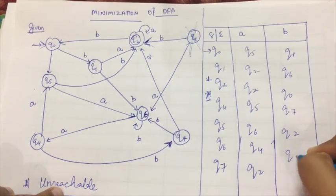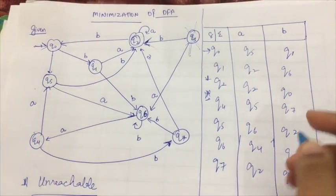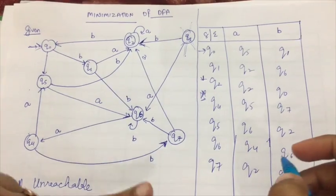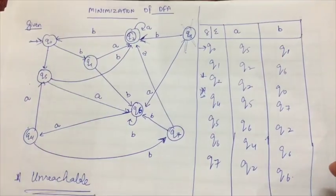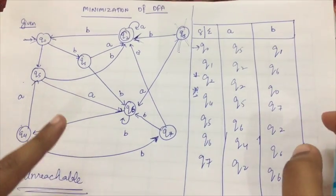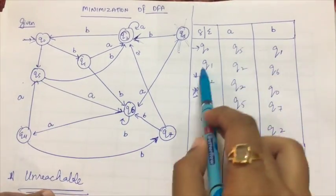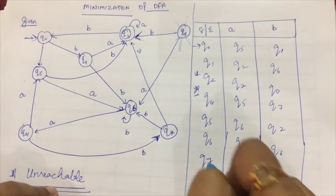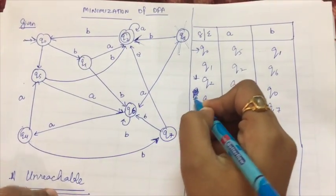Now what we are going to do is we are going to divide these rows into two sets. What will be these sets? The first set will be of the non-final states - these ones - and the second set will be of the final states.